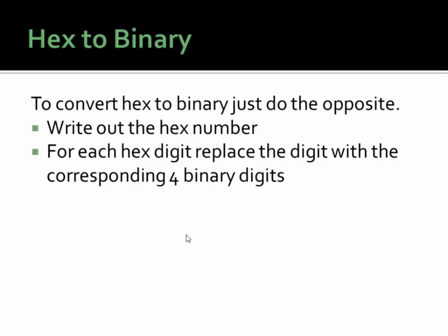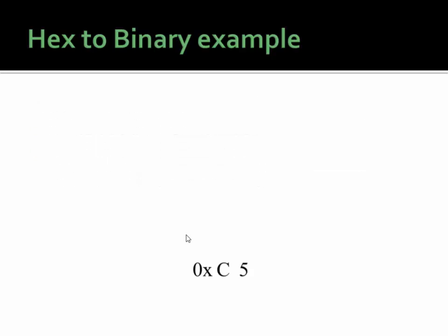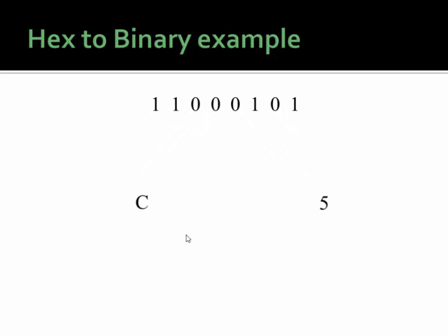If you want to convert hex to binary, just do the opposite. Write out the hex number, and for every hex digit, replace it with the corresponding four binary digits. So if we had C5 in hex and wanted to turn that to binary, strip off the 0x, split up the C and the five, convert them to binary, and combine them together. So it's very easy to convert from hex to binary and binary to hex.